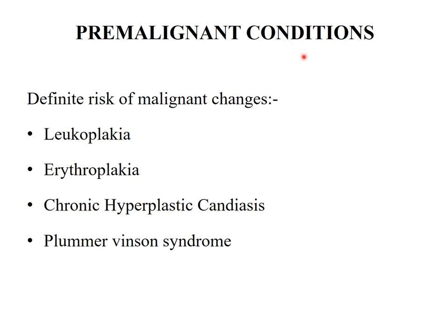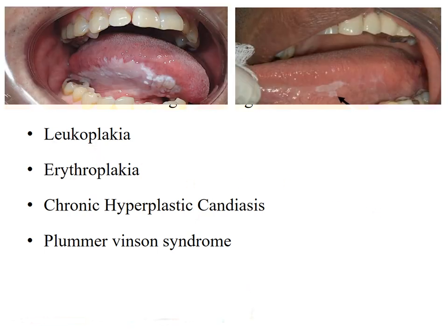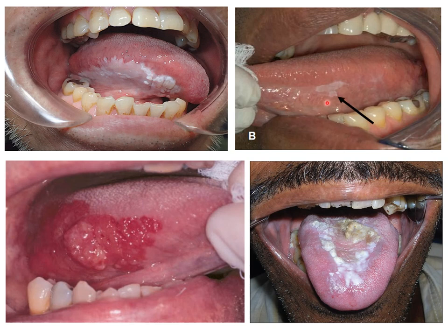Pre-malignant conditions — whenever any of these are present there is a chance of malignant transformation. They include leukoplakia, erythroplakia, chronic hyperplastic candidiasis, and Plummer-Vinson syndrome. There is a separate presentation for these pre-malignant conditions. Erythroplakia has a 17 times greater chance of converting into malignancy than leukoplakia.